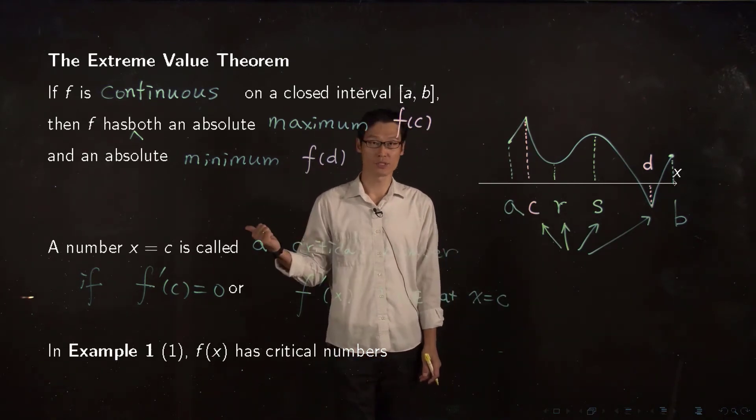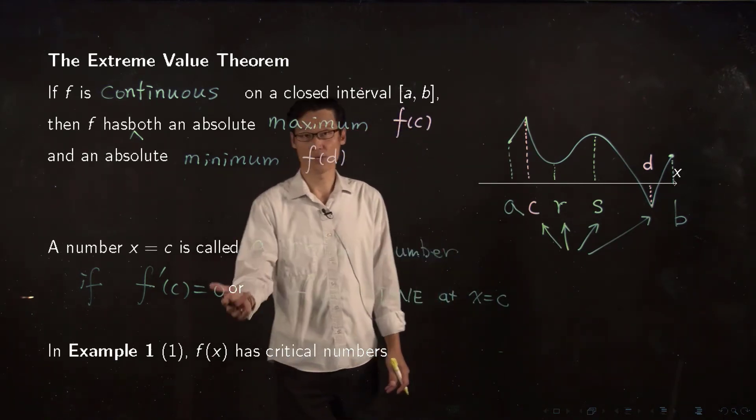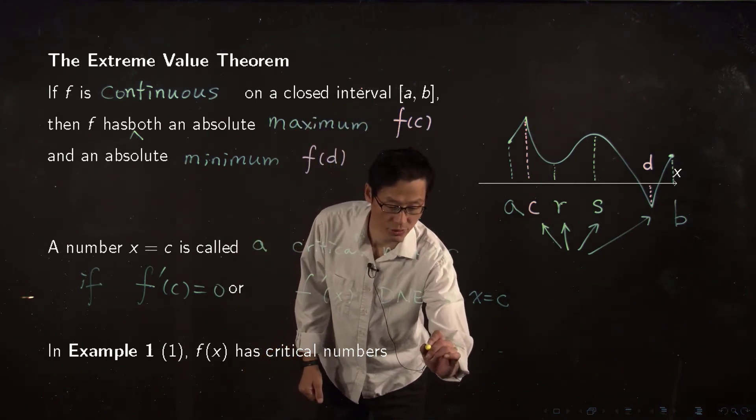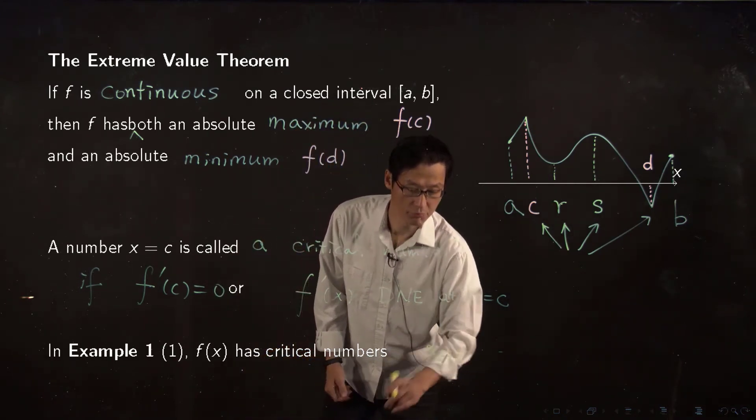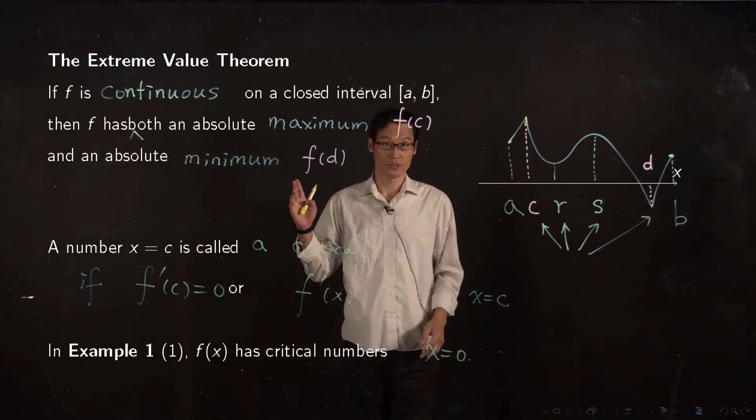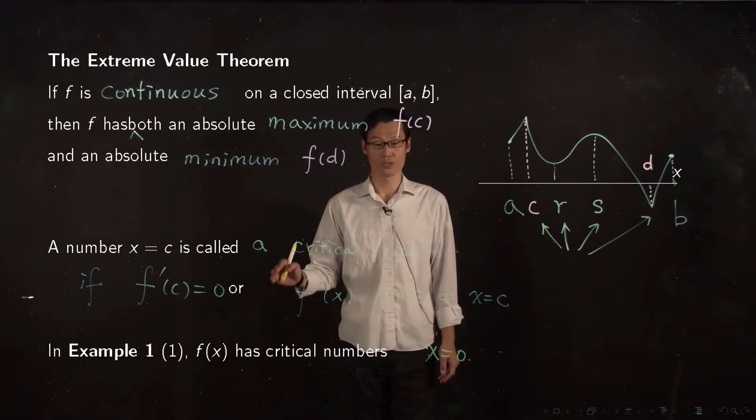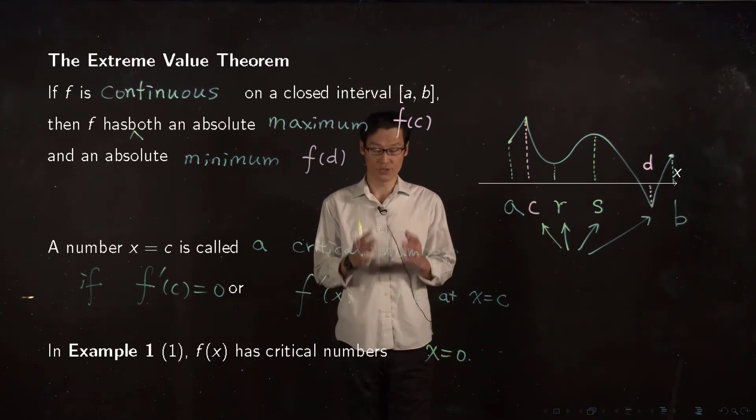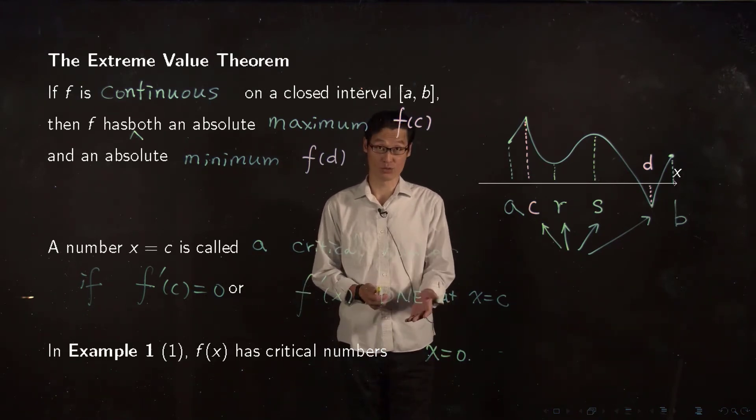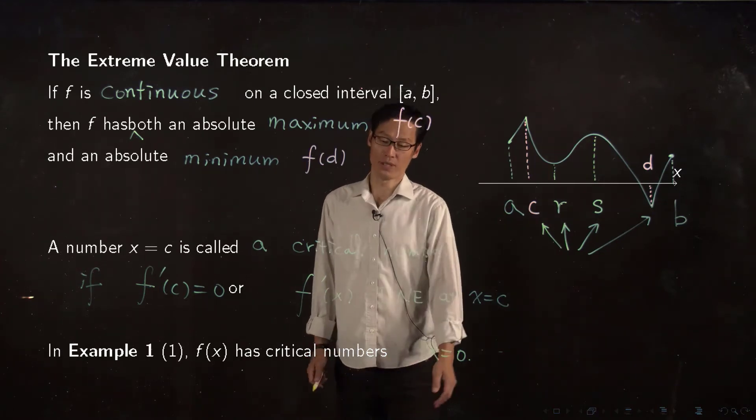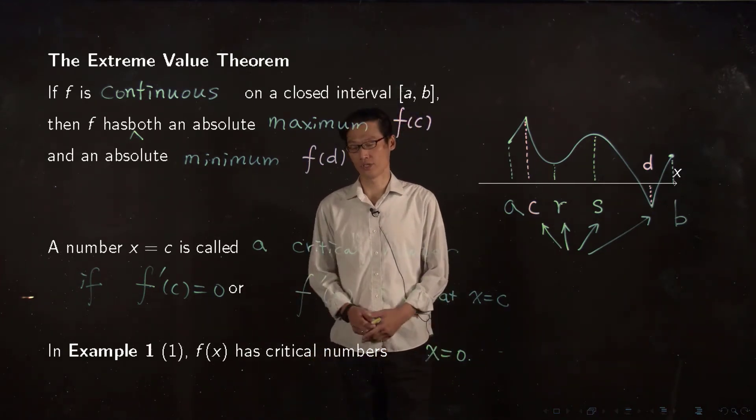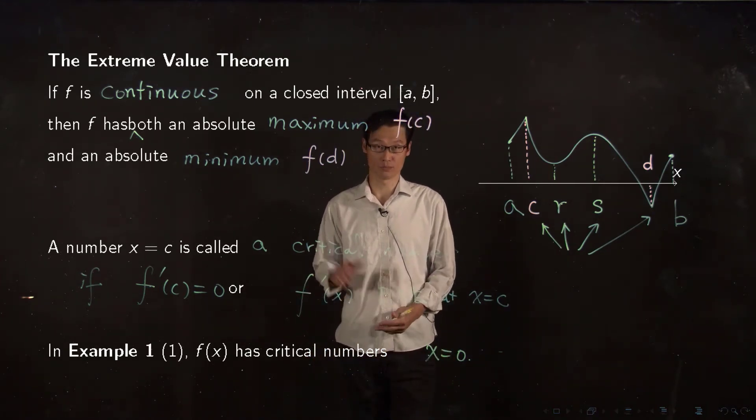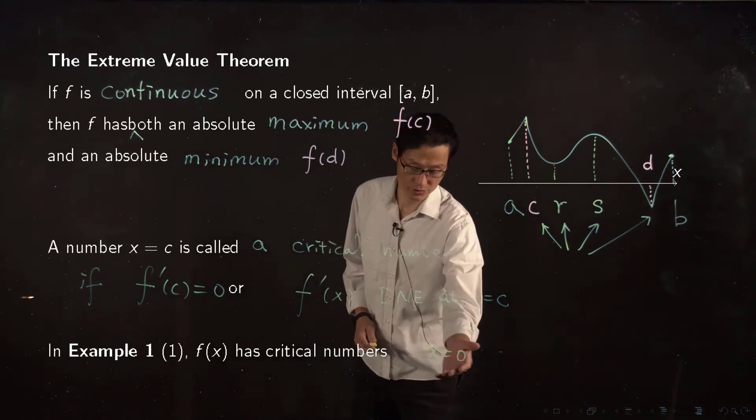In the previous example, your function has critical number x equals zero. The first function was a piecewise function, where your function is not differentiable at x equals zero. So by definition, the example F of x in the previous slide has critical number x equals zero.